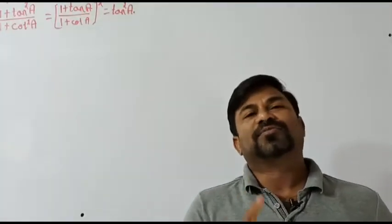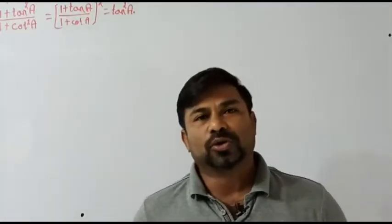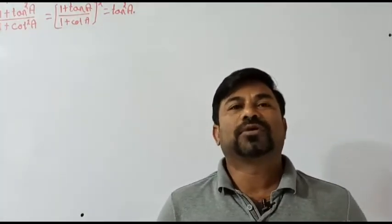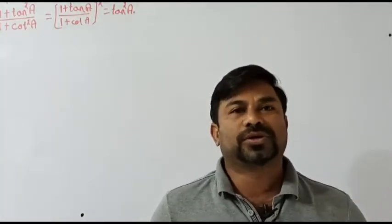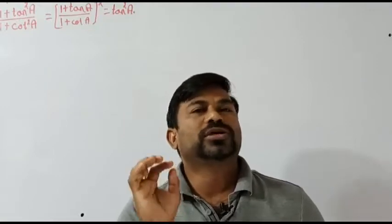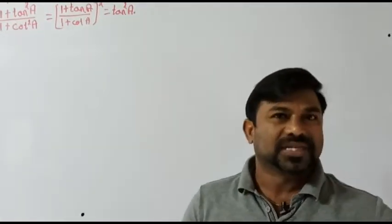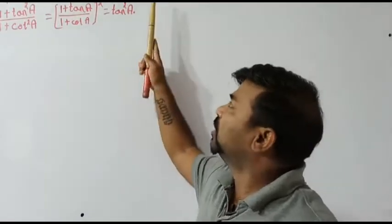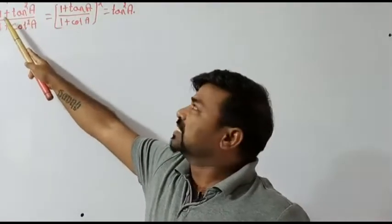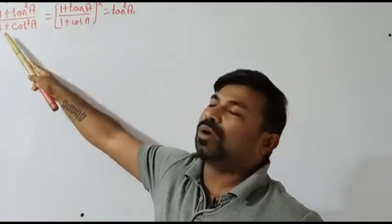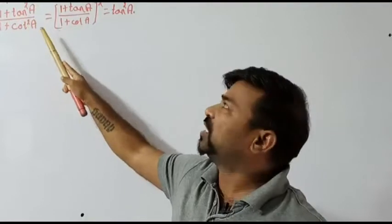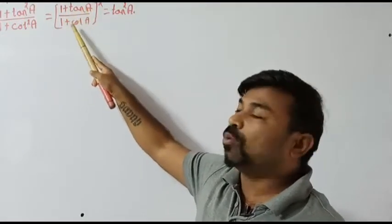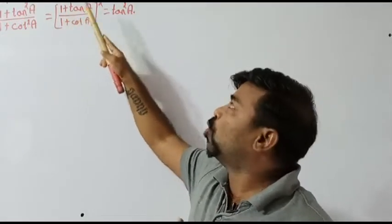Hello everyone, myself Maruti. Welcome to this math video session. In this video I have taken a sum from trigonometry — it's a tricky and beautiful sum. The question goes like this: one plus tan square a by one plus cot square a, and also one plus tan a by one plus cot a, whole square.